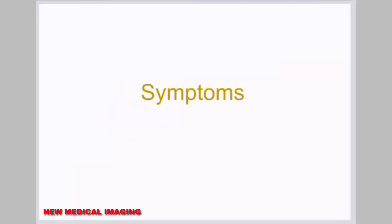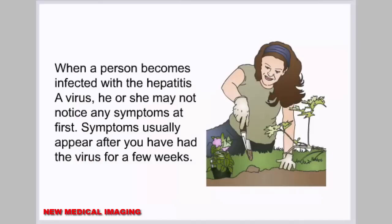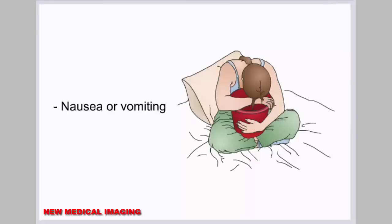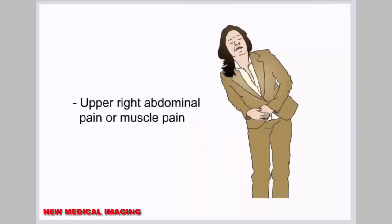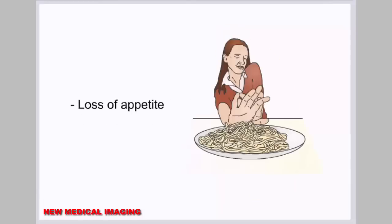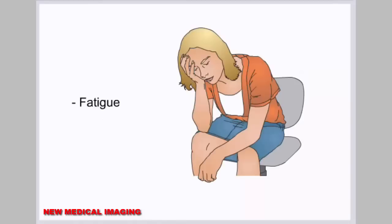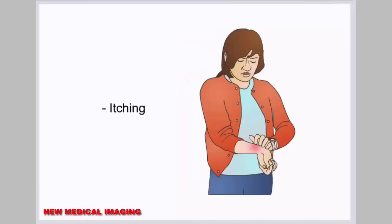When a person becomes infected with the hepatitis A virus, he or she may not notice any symptoms at first. Symptoms usually appear after having the virus for a few weeks. Common symptoms include jaundice (yellowing of the skin and whites of the eyes), nausea or vomiting, upper right abdominal pain or muscle pain, loss of appetite, low-grade fever, dark urine, pale or clay-colored stools, fatigue, and itching.